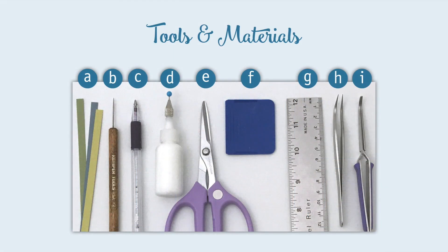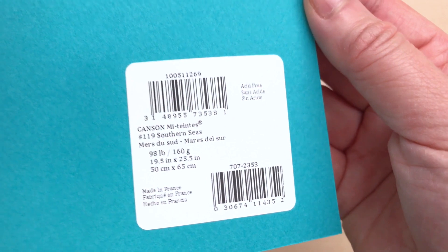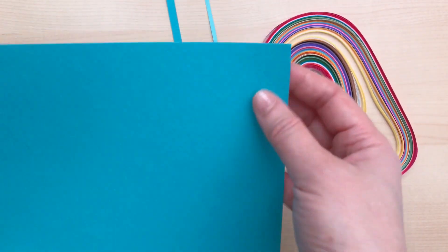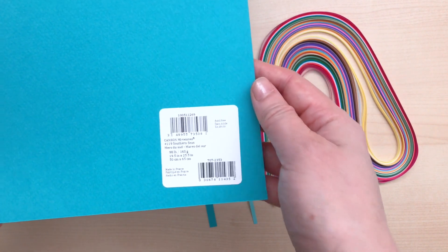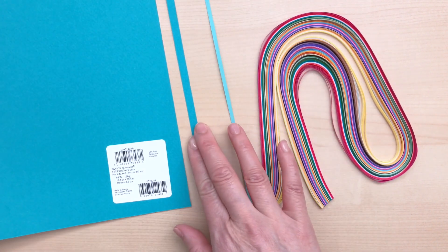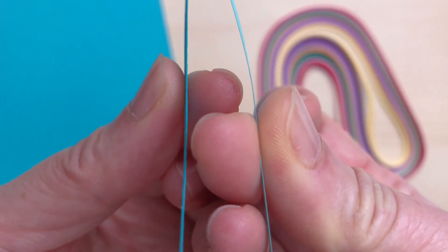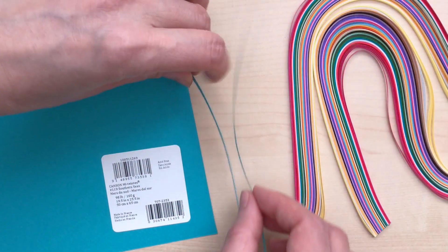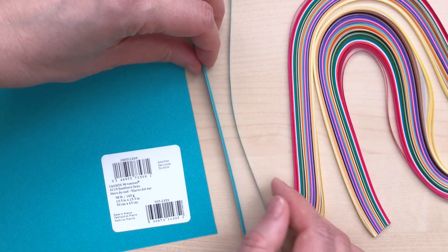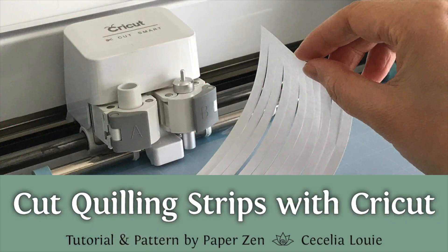Quilling paper. The paper I'm using is called Canson Mi-Teintes which is thicker than conventional quilling paper. It's 160 GSM in weight and I cut my own strips at a quarter inch width using a Cricut Explore Air cutting machine. I prefer this thicker paper because I find the conventional quilling paper to be wavier when I'm gluing long straight edges. If you want to cut your own strips please watch my other videos showing how to cut quilling paper by hand or by machine.